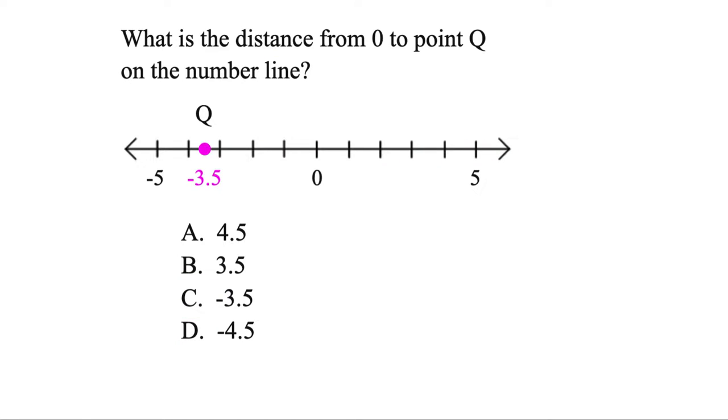And we're back. What is the distance from 0 to Q on this number line? Now, you might be thinking, well, that's easy. Just go from there to there, it's just negative 3.5. But just keep in mind distance has to be positive, so therefore, flip it to positive 3.5. By the way, any time you're going from 0 to another number on the number line, that distance is that number, just make it positive.